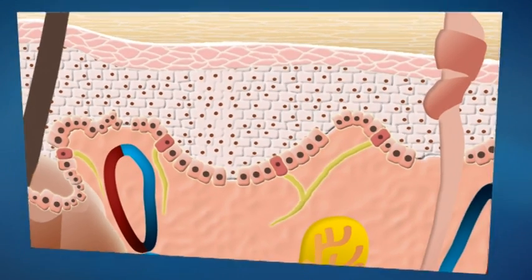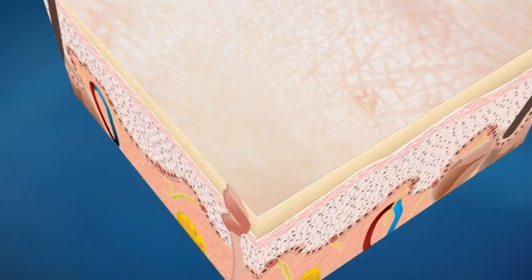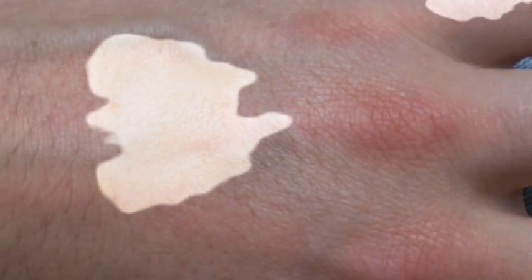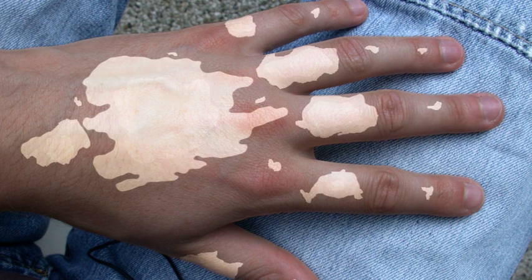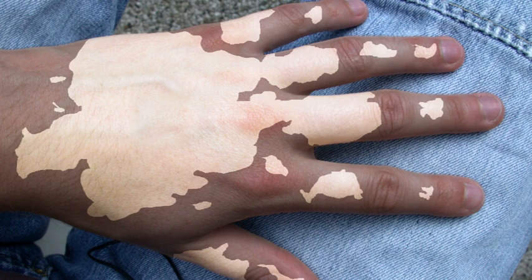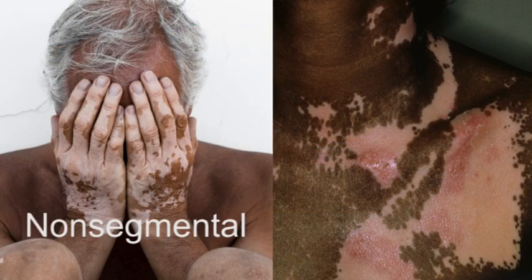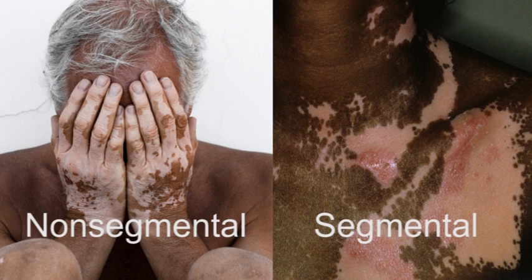Affected vitiligo skin is characterised by the presence of chalk or milk-white patches in which the hair may also be white. Patches are usually well demarcated and enlarge centrifugally in size with time. Vitiligo is traditionally separated into two types: non-segmental or generalised vitiligo, and segmental vitiligo, which present distinctive clinical features and causes.